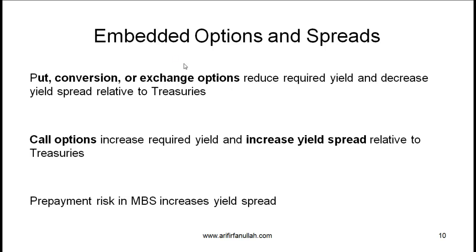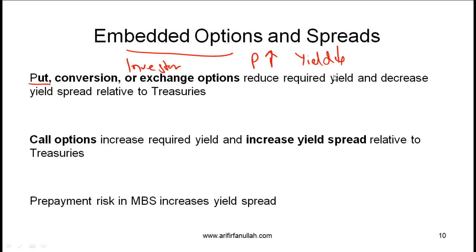Next, let's talk about the impact of embedded options on spreads. When you have embedded options such as a put option, conversion option, or exchange option, remember all these benefit the investor. Since the investor likes these options, he is willing to pay a higher price for bonds with these options. A higher price means a lower yield, and if the yield is lower, then the spread of a bond with one of these options relative to a Treasury bond will be low.